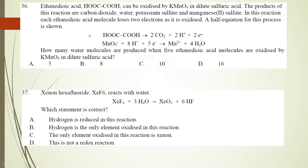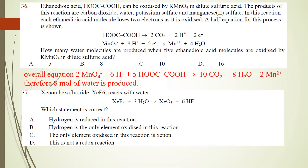Number 36: ethanedioic acid can be oxidized by KMnO4. The products are carbon dioxide, water, and manganese(II) sulfate. Each ethanedioic acid molecule loses 2 electrons as it is oxidized. The overall balanced equation is: 2MnO4- + 6H+ + 5 ethanedioic acid → 10CO2 + 8H2O + 2Mn2+. So when 5 ethanedioic acid molecules are oxidized, 8 water molecules are produced. The answer is 8.